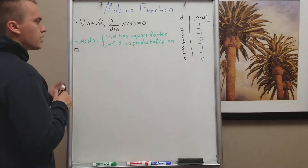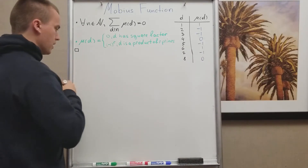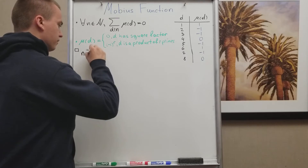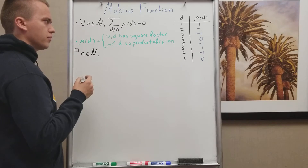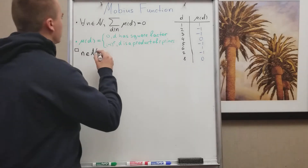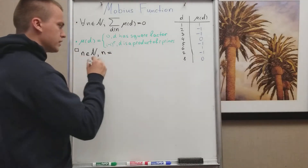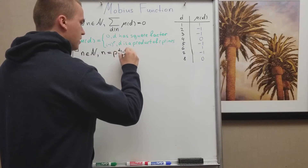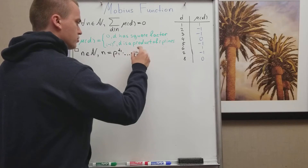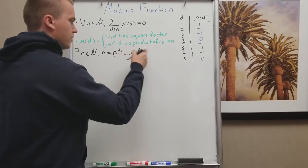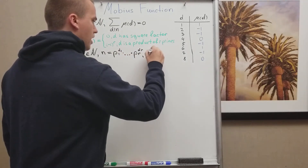To prove the statement we need to analyze n and how many divisors it has. By the Fundamental Theorem of Arithmetic, any natural number n can be written uniquely as a product of prime powers: n = p₁^α₁ · p₂^α₂ · … · pᵣ^αᵣ, where each αᵢ is a natural number and each pᵢ is a prime.